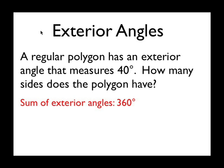If the polygon is regular, that means all the angles, both interior and exterior, are congruent. So if they're all 40 degrees, we can do 360 divided by 40, which gives us 9. So there are 9 sides for a nonagon.